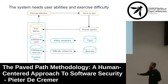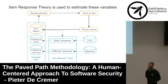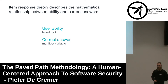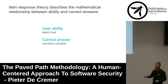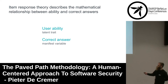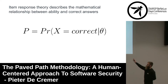For this, I used what is called item response theory, a theory from the field of psychometrics. In this theory, the user ability is considered a latent trait — something that we cannot measure directly. We cannot simply scan somebody's brain and determine their ability level at software security. However, what we can do is ask them questions — a manifest variable. We can observe their answers, and of course there is a relationship between these two. This is what is modeled in item response theory: P, the probability of a correct answer, given theta, the ability level of a user.